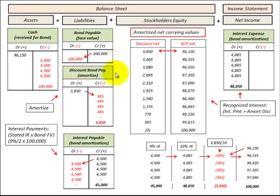In summary, the discount on bonds payable is a balancing entry between cash and bonds payable, and it also represents the added interest expense on the bonds payable — acting as a balancing account between interest payable and interest expense.